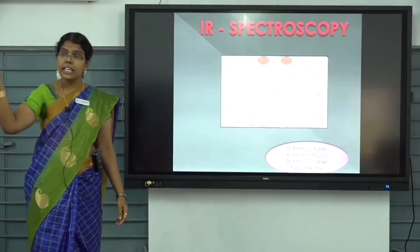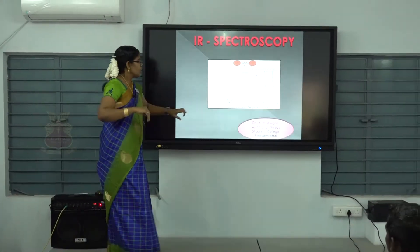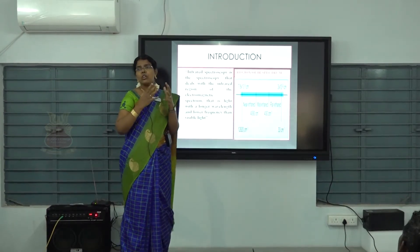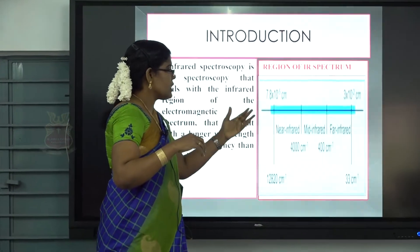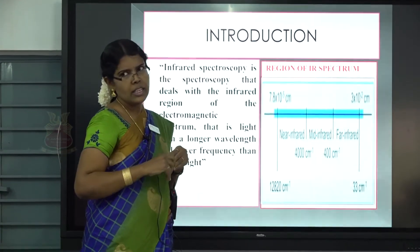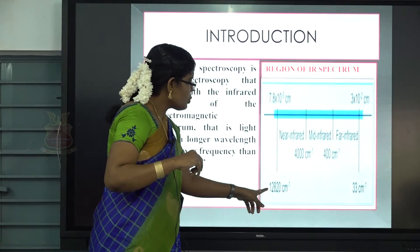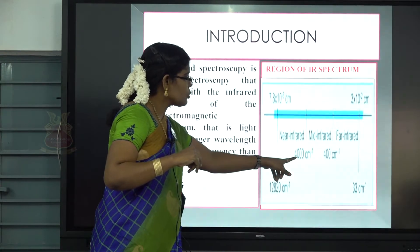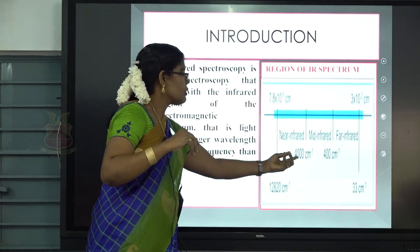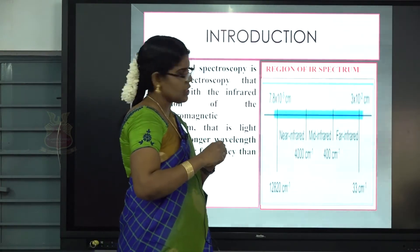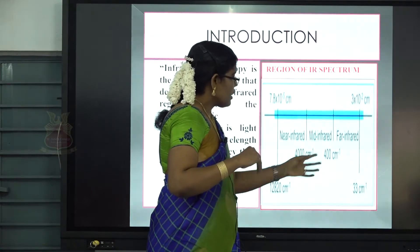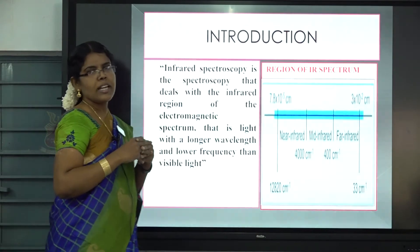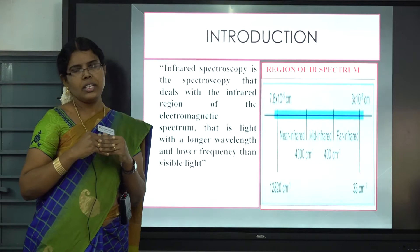Infrared spectroscopy is the type of spectroscopy which deals with the interaction of IR radiation with matter. The infrared regions are divided into three categories: near infrared (12,820 cm⁻¹ to 4,000 cm⁻¹), mid infrared (4,000 to 400 cm⁻¹), and far infrared (400 to 33 cm⁻¹).